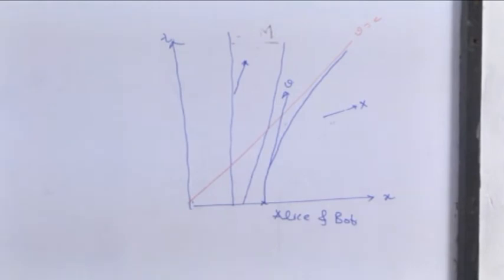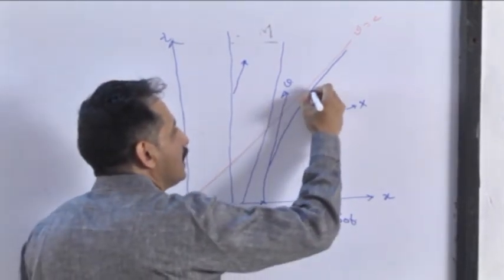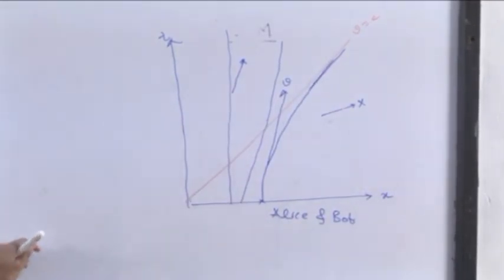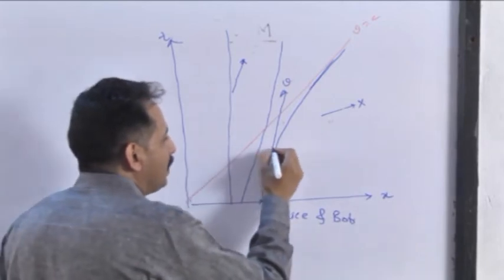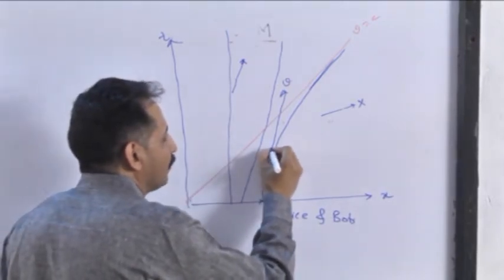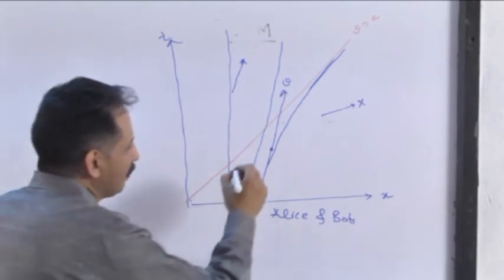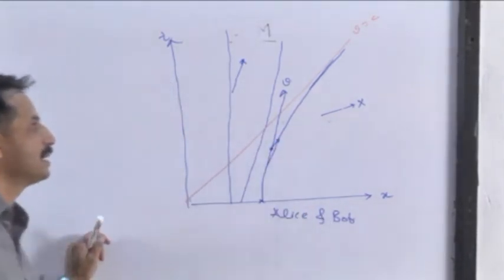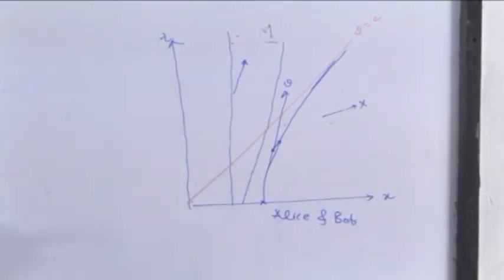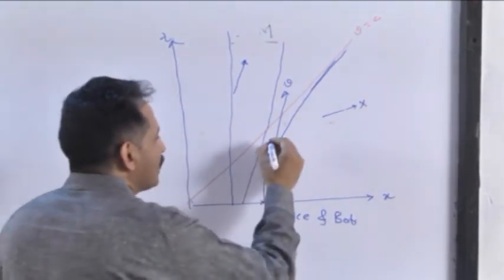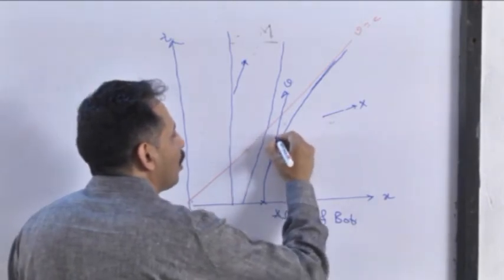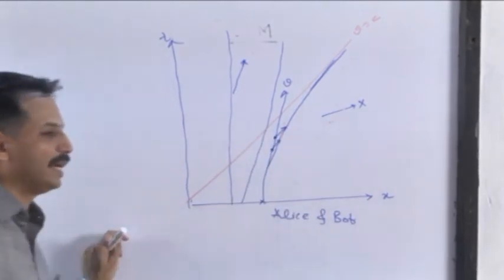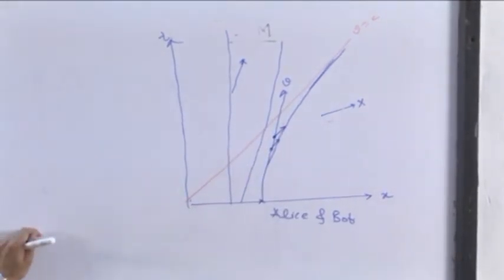And Bob is still in the rocket and he's traveling and he's accelerating in this direction. The light emitted by Alice will travel with an inclination 45 degrees and will take some time to reach and she will realize that Bob is still traveling. Bob will observe that she is traveling with slower and slower speed because the light emitted at an angle 45 degrees will take more and more time to reach Bob.